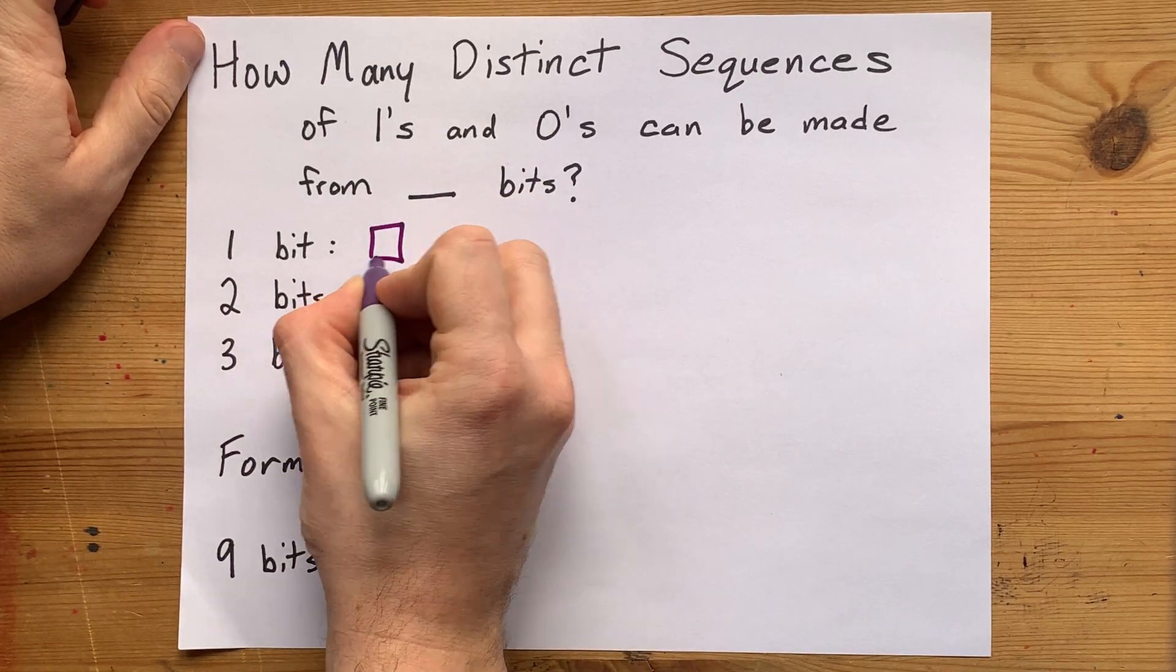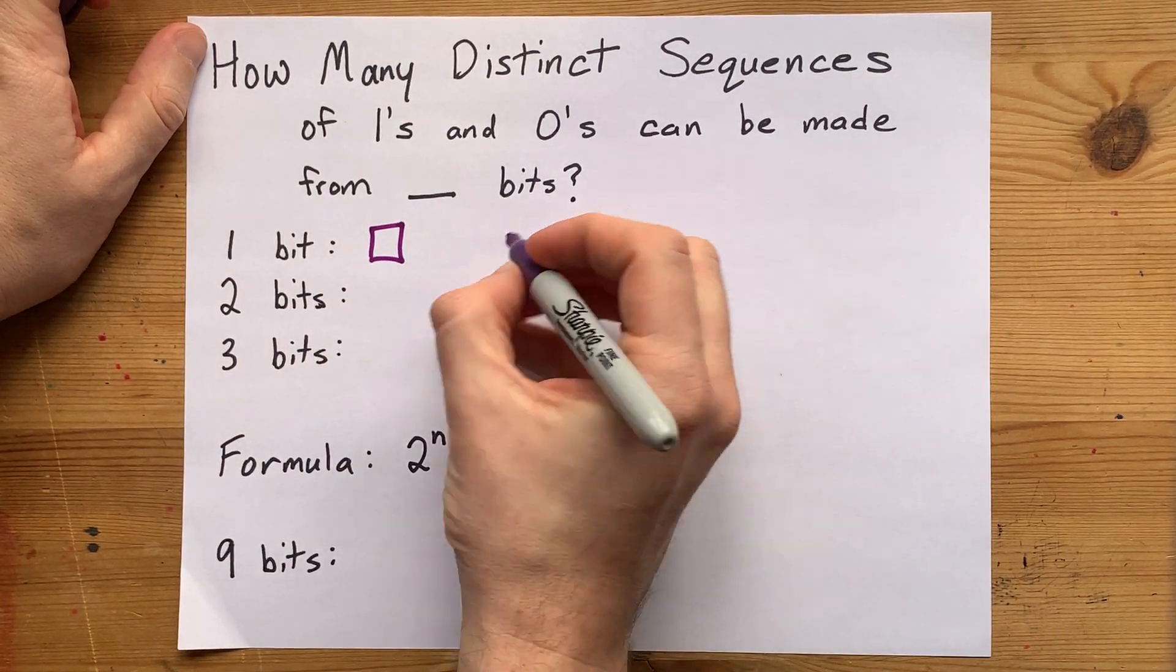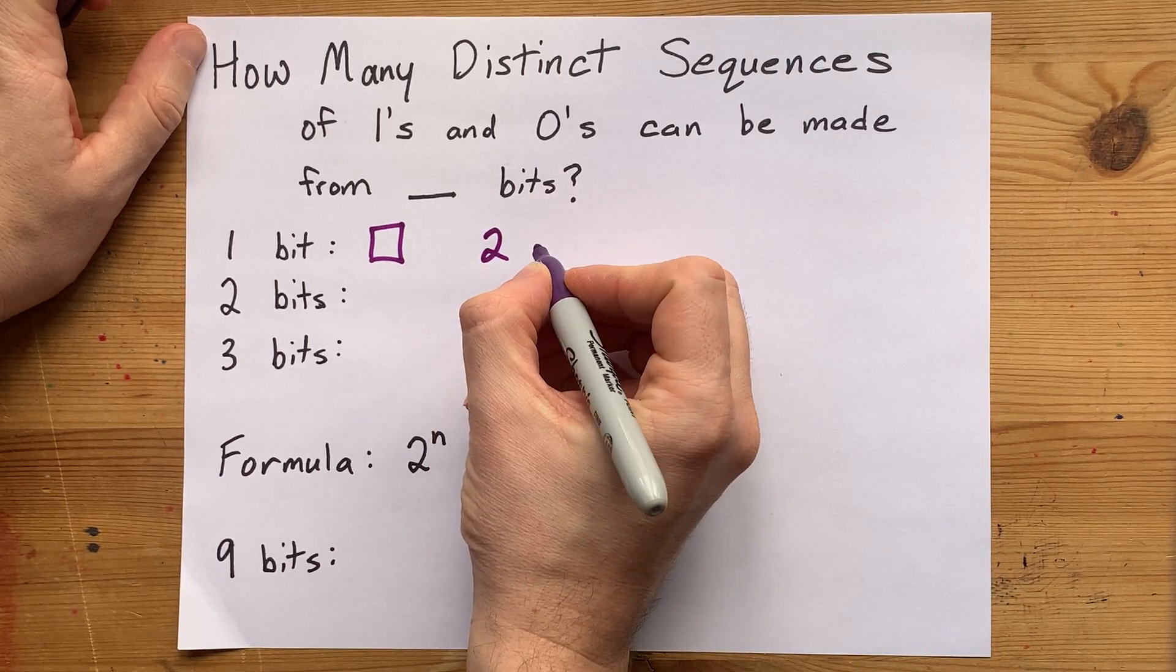So if you have a little switch here and it's got to get filled in with a 1 or a 0, that's two options and you're done.